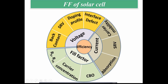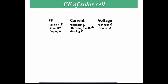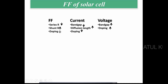Fill factor also depends on parameters that affect VOC and JSC combined — such as carrier concentration, conduction band offset (CBO), and interfacial recombination. Interfacial recombination provides a short circuit path causing VOC loss and current losses. For good fill factor: series resistance should be low, shunt resistance should be high, and doping should be high.